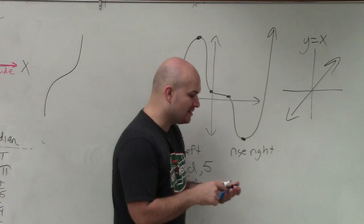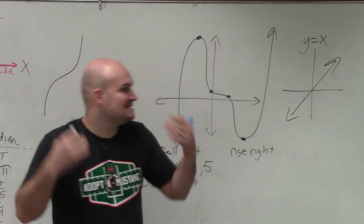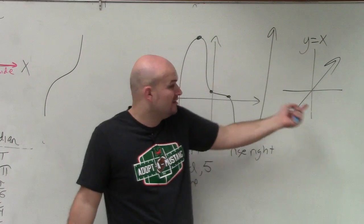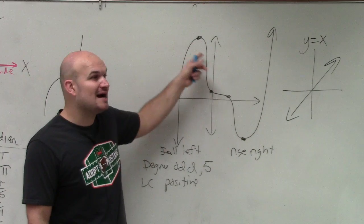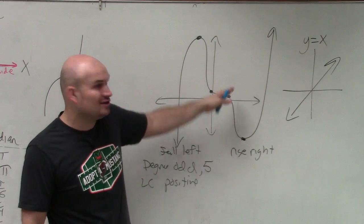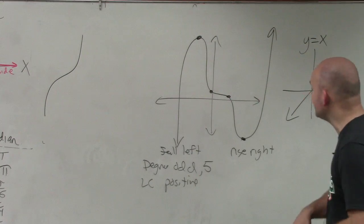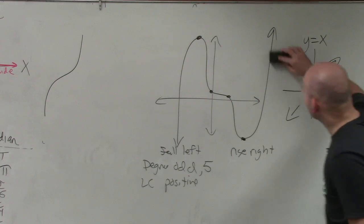The last thing I want you guys to understand about end behavior is this idea. I just showed you end behavior with a function that you're familiar with. However, we're going to be looking at graphs and polynomials that you're not going to know. Look how crazy this graph looks, right? But the main important thing is it doesn't matter what the graph looks like.